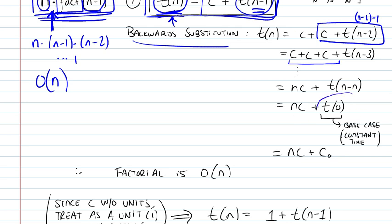And the base case is, in the factorial case, is basically just a constant step. So in the factorial case, it would be multiplying by 1.